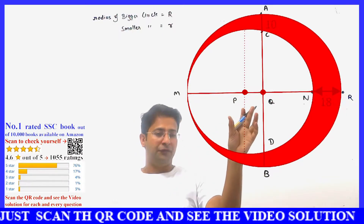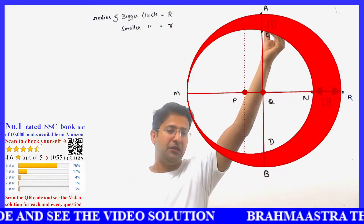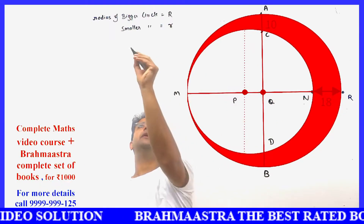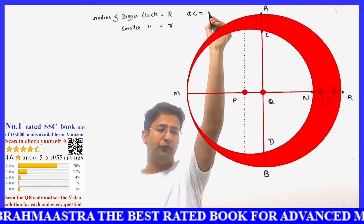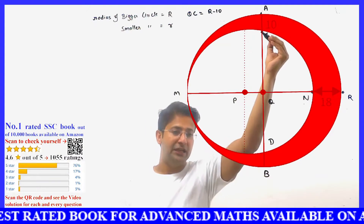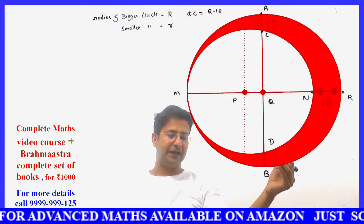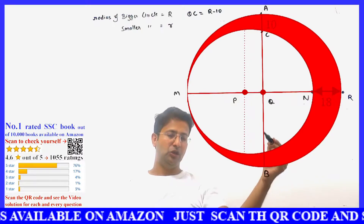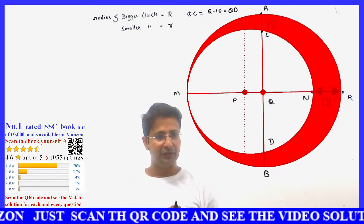If Q is the center of the bigger circle, then QA = capital R. QC will be R minus 10 — because AC is 10. Similarly, QD = R minus 10, since QB = R and BD = 10. So QD = R minus 10.